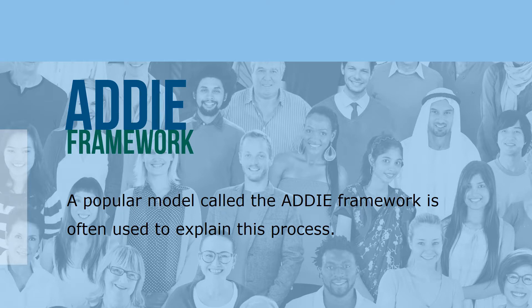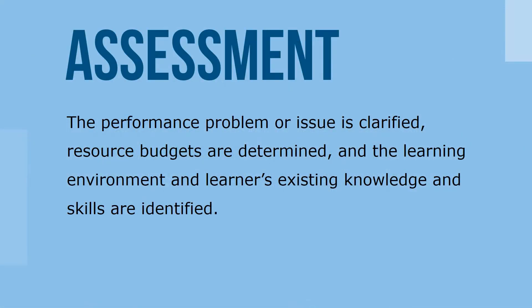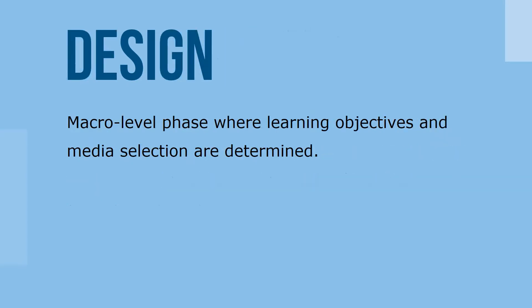The ADDIE model includes five key phases. First is assessment, where the performance problem or issue is clarified, resource budgets are determined, and the learning environment and learner's existing knowledge and skills are identified. Then comes design, which is a macro-level phase where learning objectives and media selection are determined.